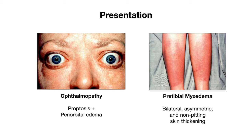Another finding is pretibial myxedema, where you have bilateral, asymmetric, and non-pitting skin thickening along the legs, but it can also be found in other areas as well. This finding is not as common these days now that we are diagnosing and treating Graves' disease much earlier than before.